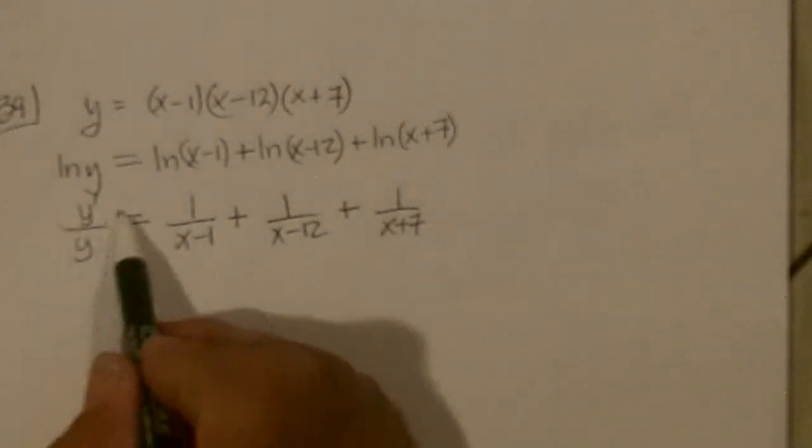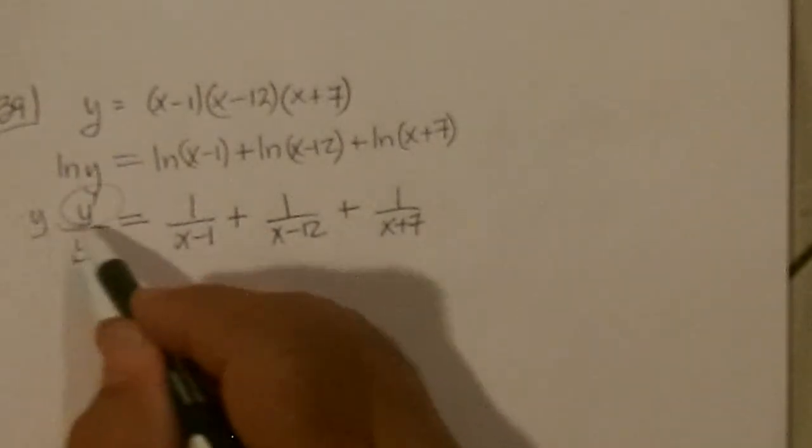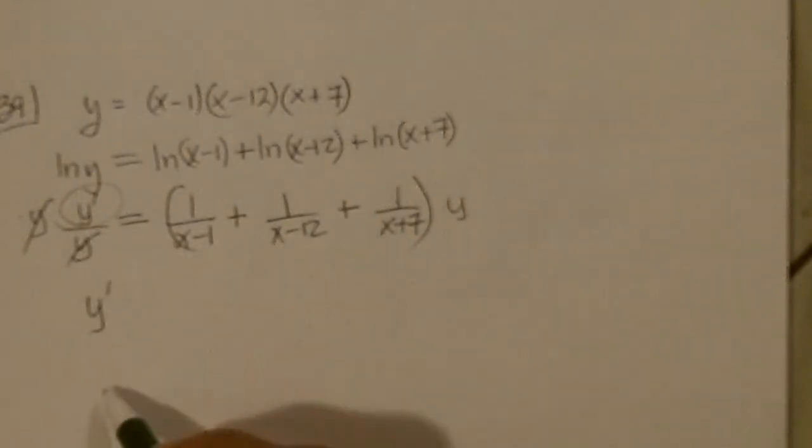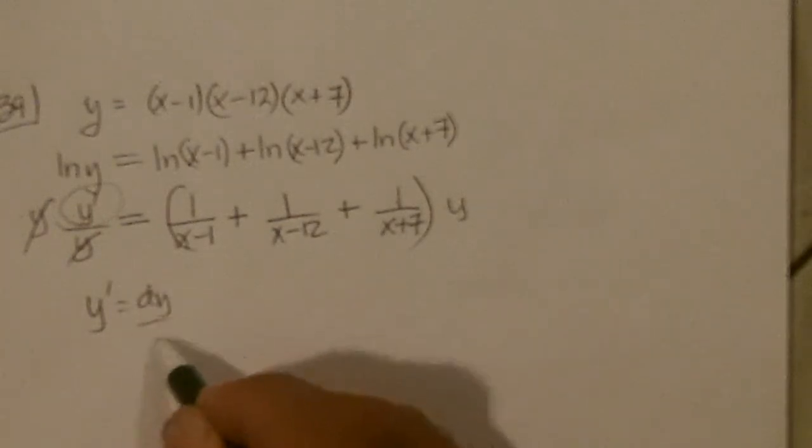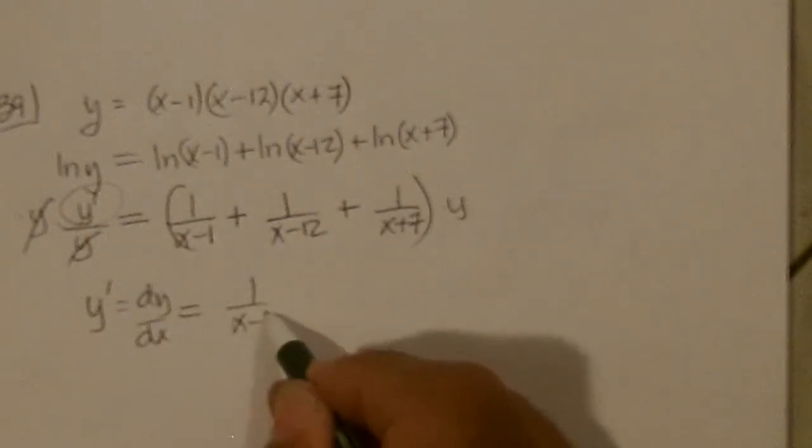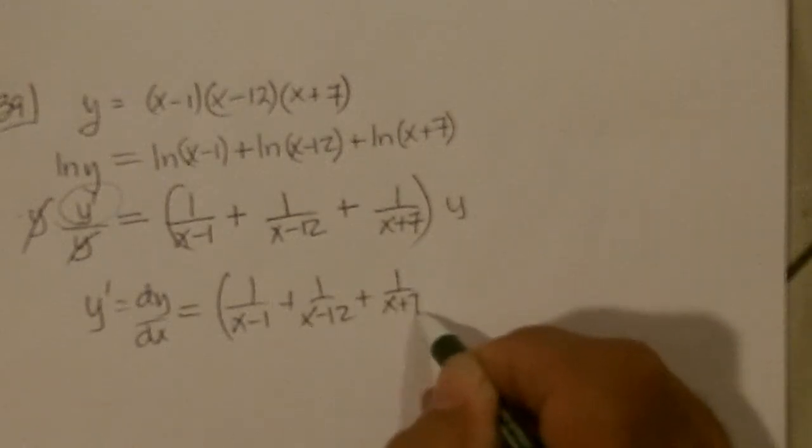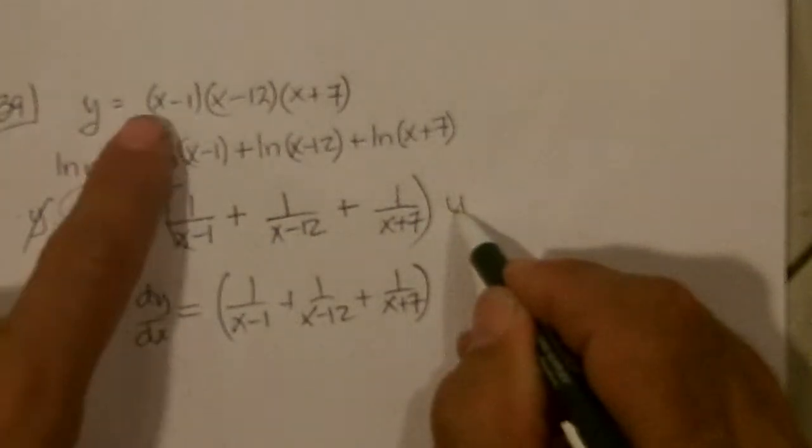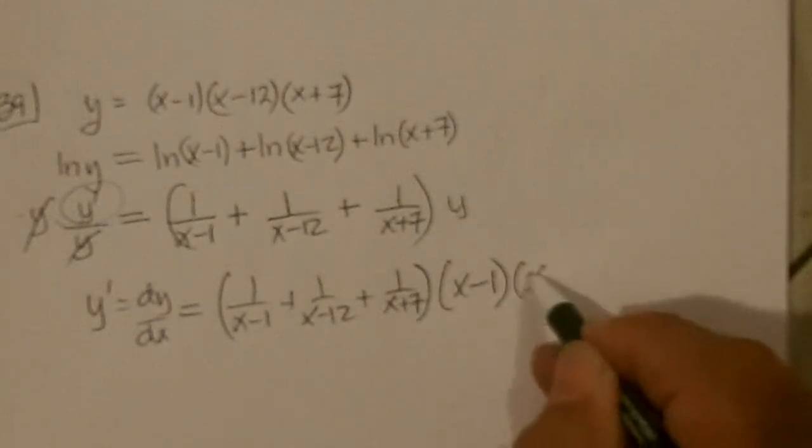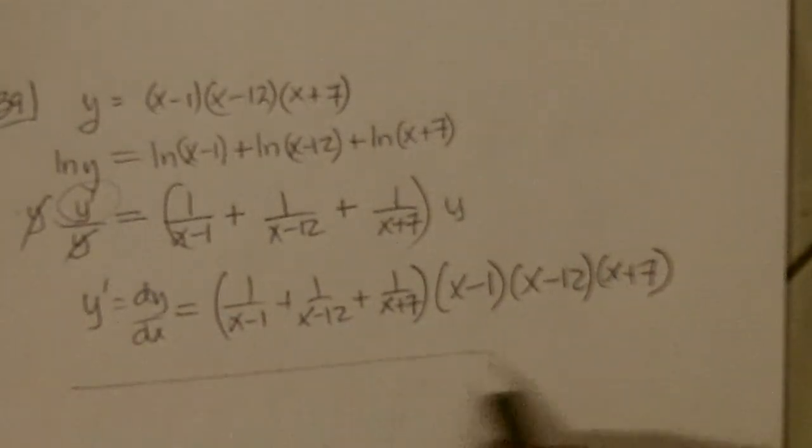And so we're trying to find the derivative. So we multiply both sides by Y. So the derivative, or dy dx, is simply all of this times Y. But Y was this original thing up there, X minus 1 times X minus 12 times X plus 7. And there's the derivative.